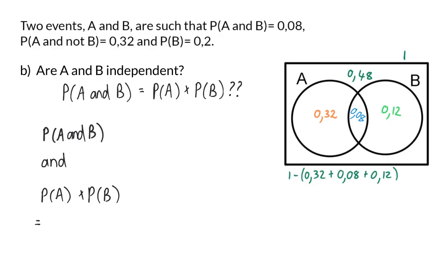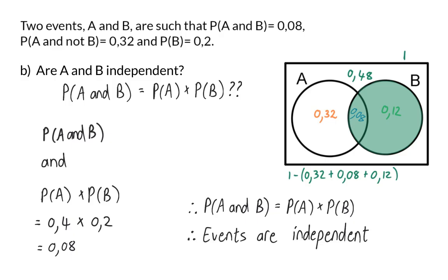The probability of A is the complete circle A, and that is 0.4, because it's the 0.32 plus 0.08. This, we're going to multiply with the probability of B, which was given as 0.2. When I multiply these two values, I will also get 0.08. Now, I can make the conclusion that the left-hand side is equal to the right-hand side, and therefore, these two events are independent.